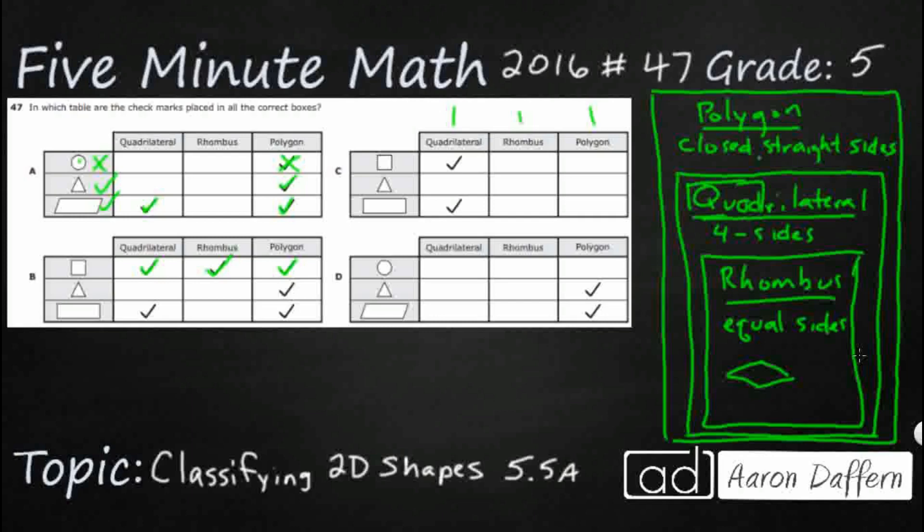That triangle, it is a polygon. It's not a quadrilateral, not a rhombus. Those two are good so far. Our rectangle is a polygon. It is a four-sided shape and it's not a rhombus because the sides are not equal. So B is looking good.